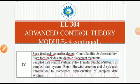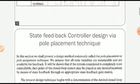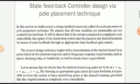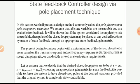This presentation gives an idea about a topic from module 4: state feedback controller design via pole placement technique. This is an important concept in control systems. As the location of closed-loop poles of the system changes, the output response of the system also changes. The output response depends on the location of closed-loop poles, so if we are able to place the closed-loop poles at a desired location, we can achieve the desired output response.